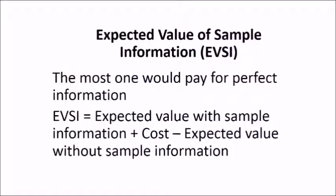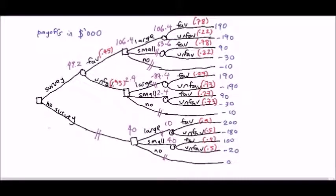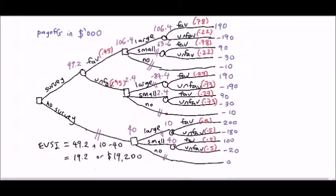We can also calculate the expected value of sample information, or EVSI. EVSI represents the most one would pay for sample information. One example is information obtained from a market survey. EVSI is calculated from the formula: expected value with sample information plus cost minus expected value without sample information. EVSI equals expected value if do survey 49.2, plus cost of survey 10, minus expected value if don't do survey 40, which equals 19.2, or $19,200.